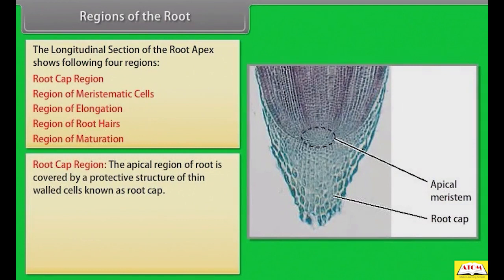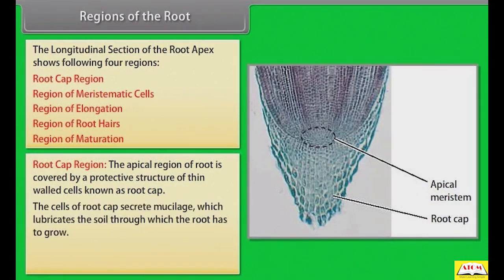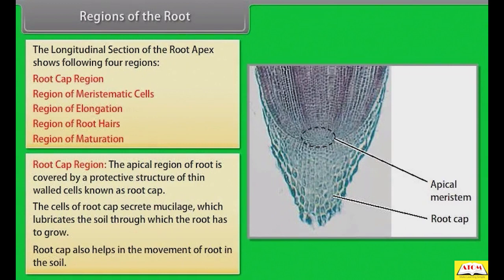The apical region of the root is covered by a protective structure of thin-walled cells known as the root cap. The cells of the root cap secrete mucilage which lubricates the soil through which the root has to grow. Root cap also helps in the movement of the root in the soil.